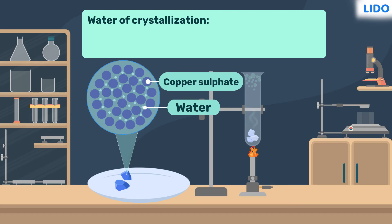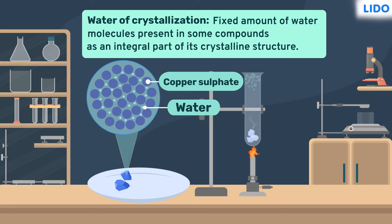This is called the water of crystallization. There are certain crystalline substances which have a fixed amount of water molecules present in it as an integral part of their crystalline structure, giving the crystal its specific geometric shape and color.